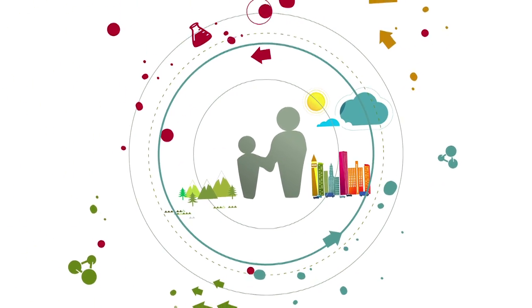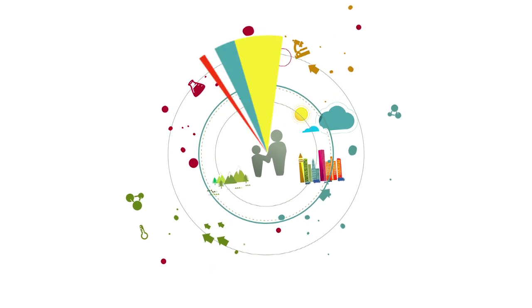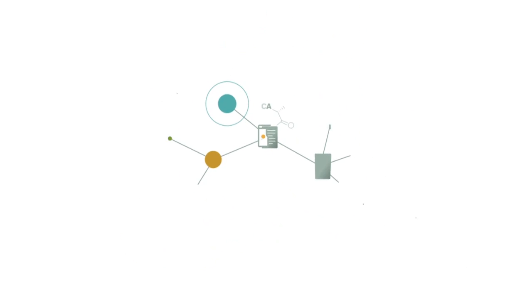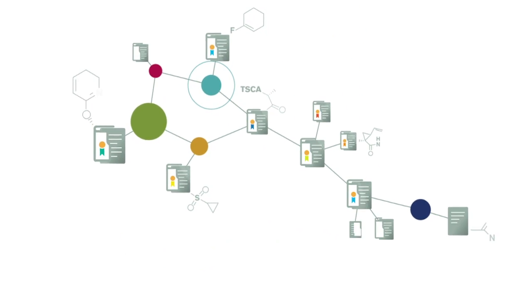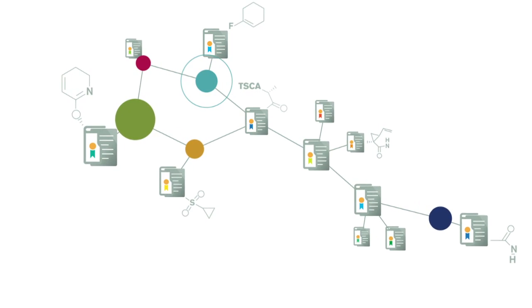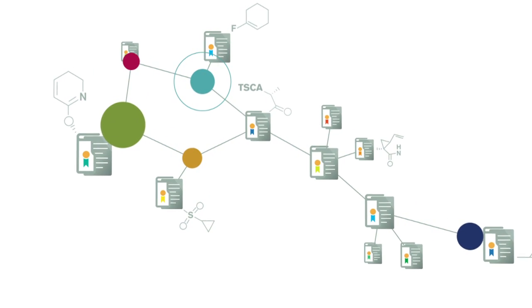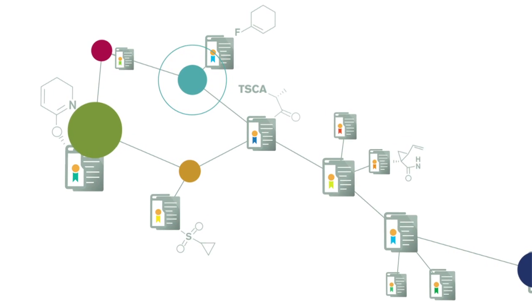As important as chemical advancements are to society, it is essential that they are used safely. That's why more than a dozen federal laws govern the safe manufacture and use of chemicals, forming a complementary regulatory system to protect people and the environment.